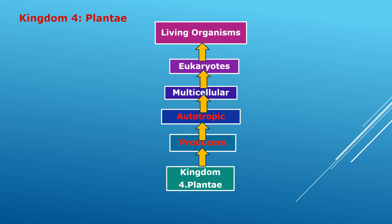Kingdom Plantae: plants are producers — they prepare their own food — so they are autotrophic, multicellular, eukaryotic living organisms. Autotrophic means they can prepare their own food; multicellular means containing more than one cell; eukaryotic means containing a nucleus with bound cell organelles and having a complex structure.